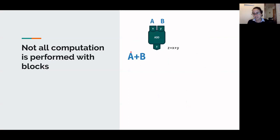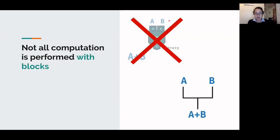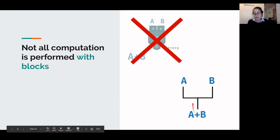Similarly, not all computation is performed with blocks. For example, you might expect an adder block, but addition is performed by leveraging the physical behavior of analog currents — by routing connections to the same point. Because due to Kirchhoff's law, the sum of currents at a junction point is zero, if you have two incoming currents with values A and B, the outgoing current will carry the current level A plus B.